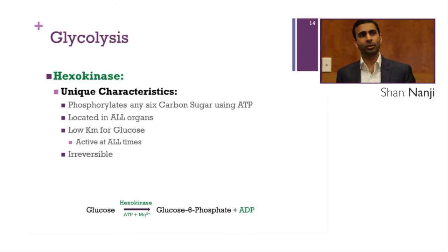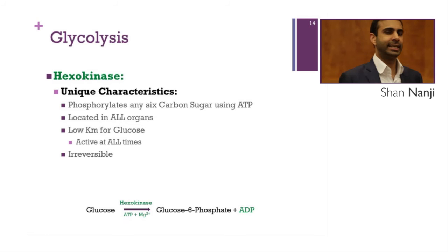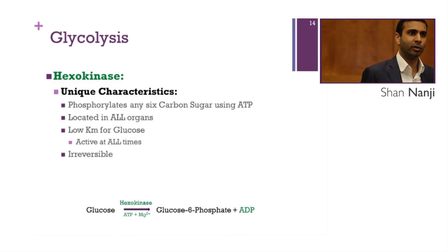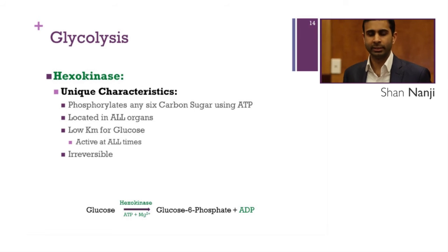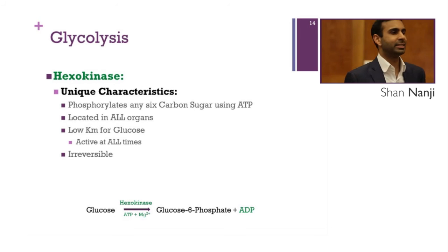What's unique about hexokinase is that it phosphorylates any 6-carbon sugar using ATP. It is located in all organs and has a low Km for glucose, meaning it is active at all times. It is irreversible. This enzyme would be most active in organs that require the most energy: the brain, heart, and kidney.